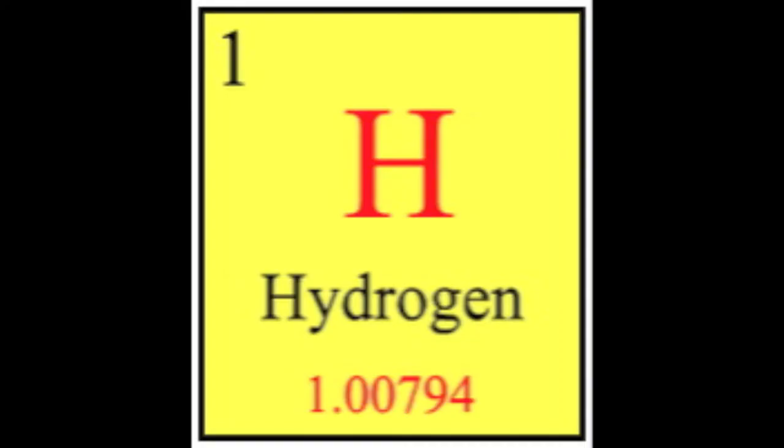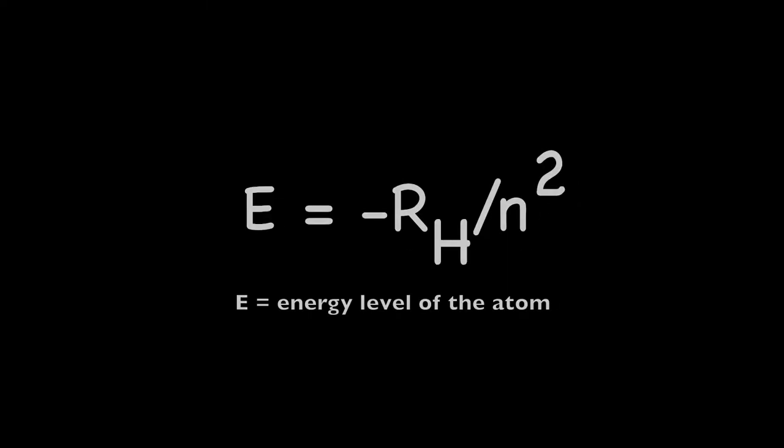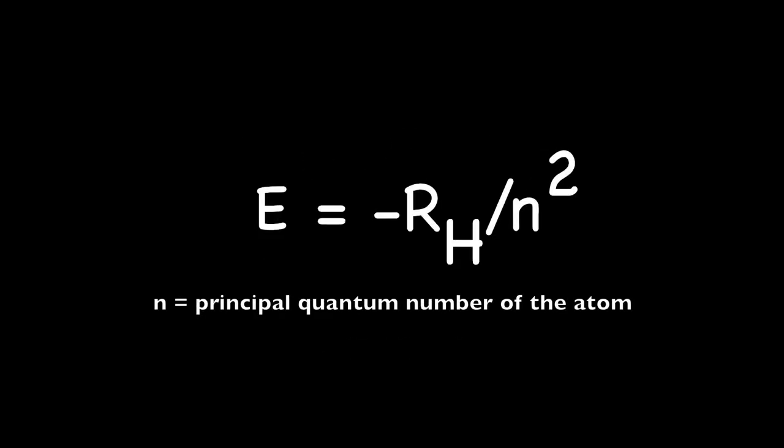The energy level of a hydrogen atom is given by the following equation, where E is the energy level of the atom, RH is the Rydberg constant, and N is the principal quantum number.